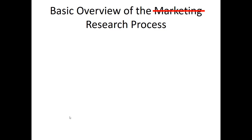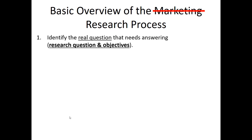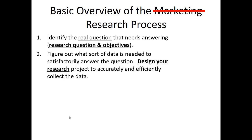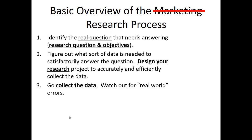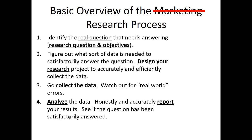We can break down the research process into four broad meta-categories. Step one: figure out what the real question is that we need to answer — establish research question and objectives. Step two: design our research project, drawing a blueprint that plans out exactly what type of data we're going to collect and how we're going to collect it. Then we go collect the data, watching out for real-world problems. Once data is in hand, we analyze it and honestly and accurately report the results, checking whether we actually answered our original question.